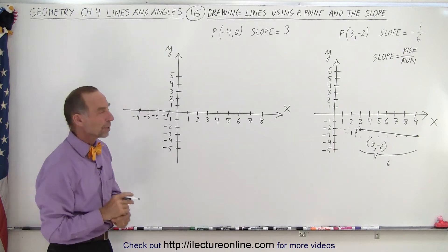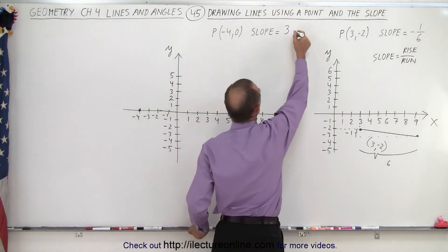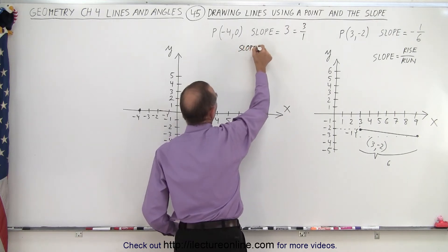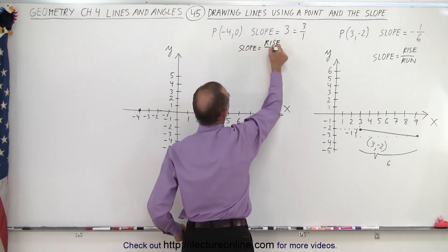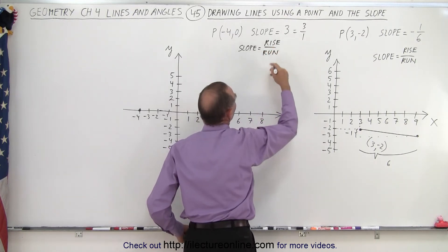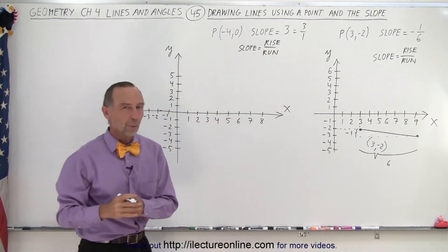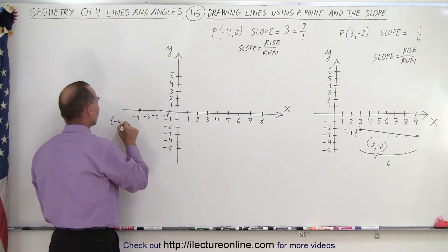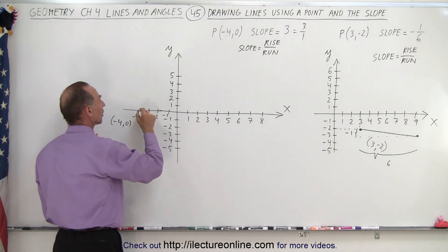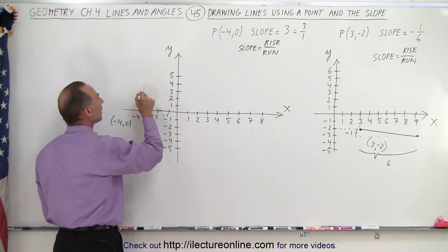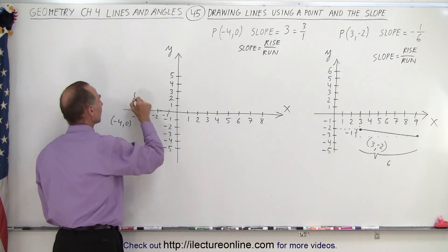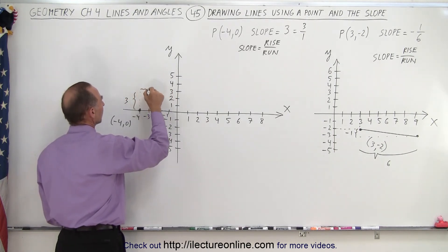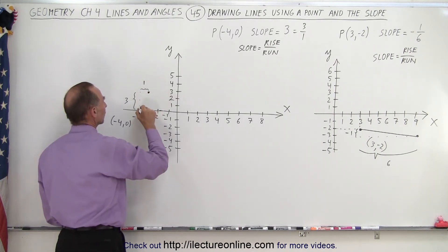The slope is 3, so we can write it as 3 over 1. Remember that the slope by definition is equal to the rise over the run, which means a rise of 3 for a run of 1. So from the starting point (negative 4, 0), I rise 3 — going 1, 2, 3 — and I run 1. That's a rise of 3 and a run of 1, and there's my new point. So I connect those two.